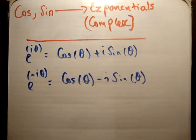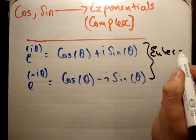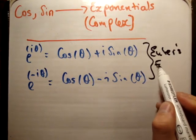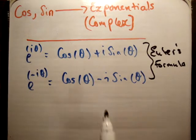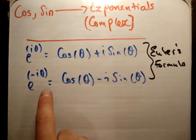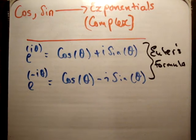I've written down there what Euler's formula means, and this is Euler's formula. To read it out, it means e^(iθ) equals cos(θ) plus i·sin(θ), and e^(-iθ) equals the same thing with a negative sine. That's Euler's formula, and that's the end of it really.